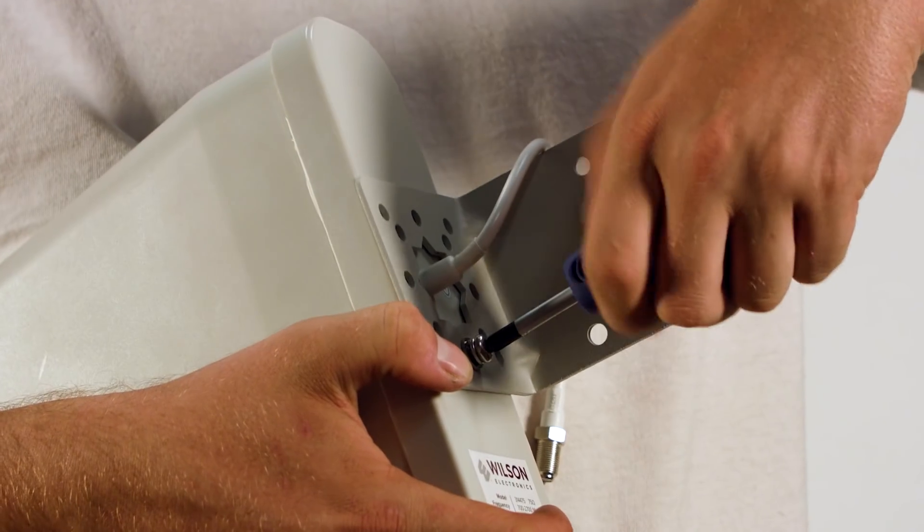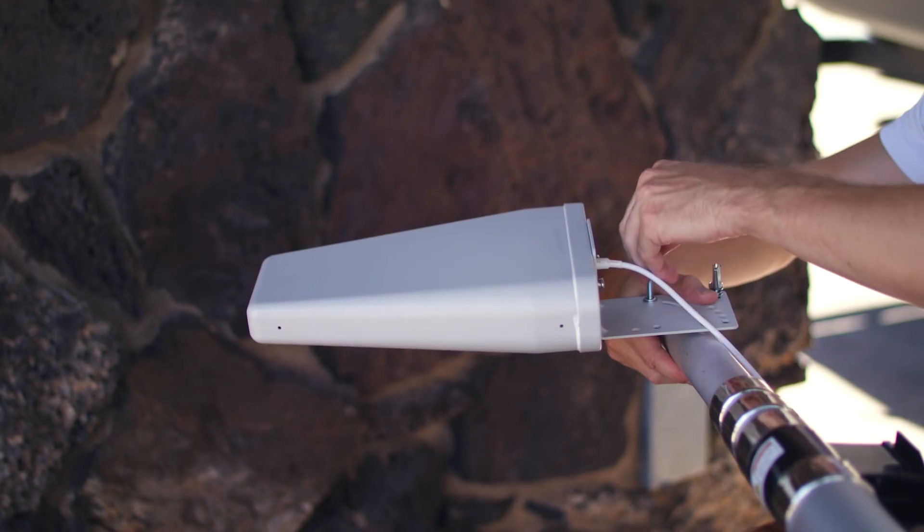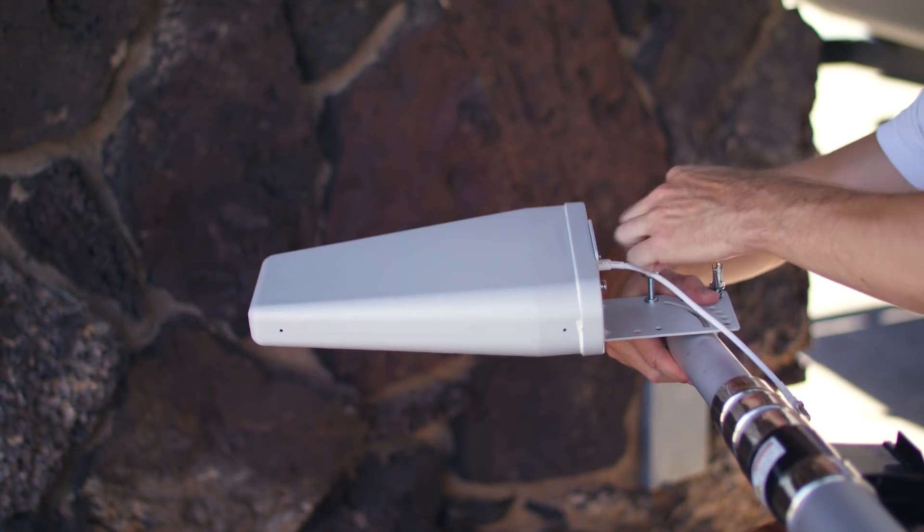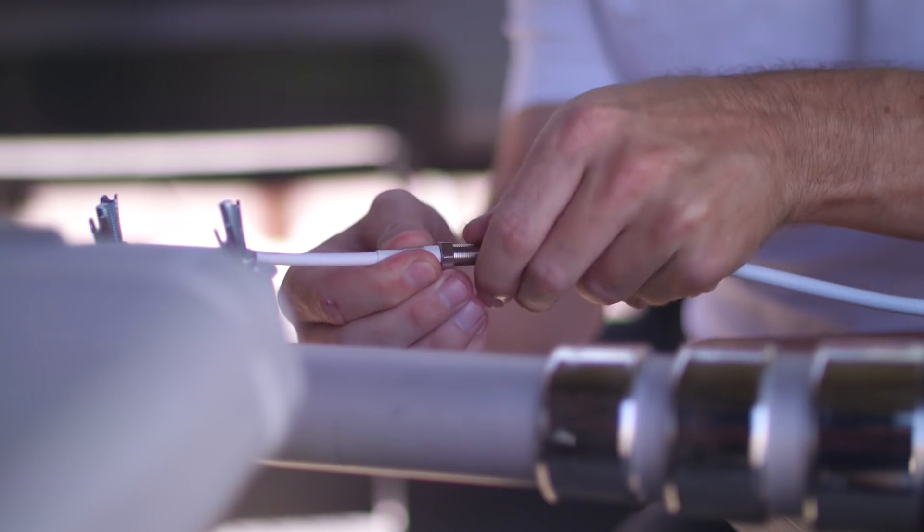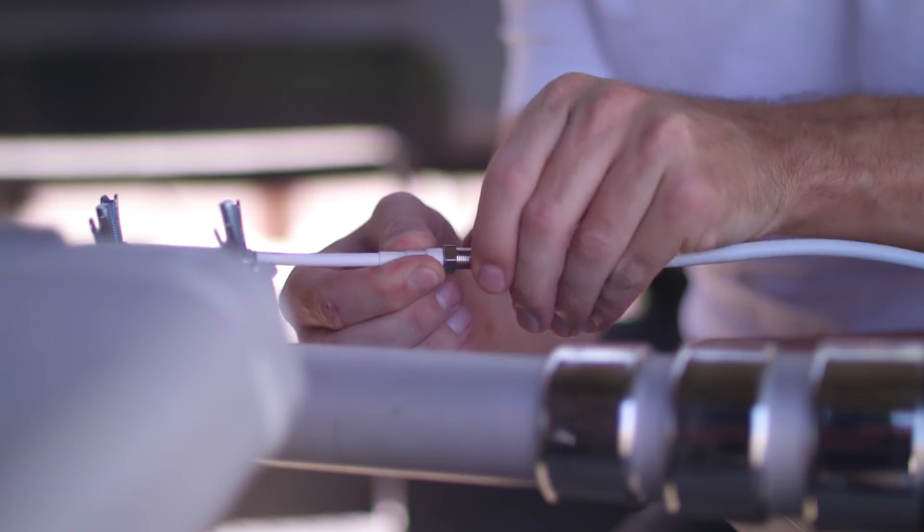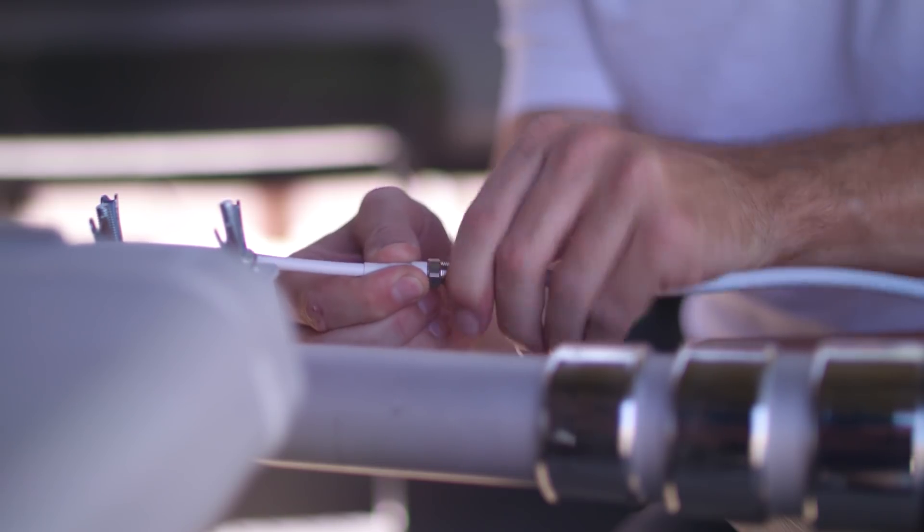Run the coax cable through the L-bracket. Then, using the U-bolt lock washers and wing nuts, secure the antenna to the top of the telescoping pole. After mounting the antenna to the telescoping pole, connect the coax cable to the outside antenna.